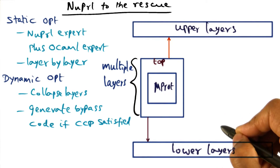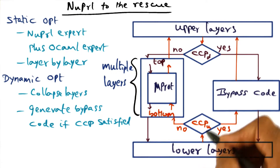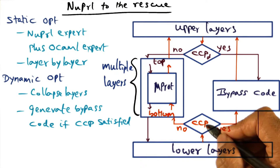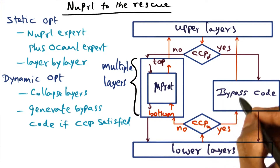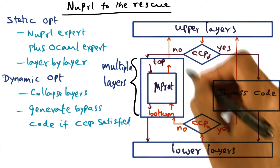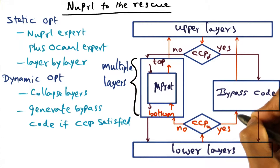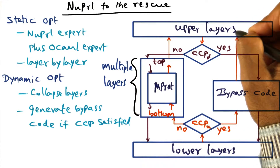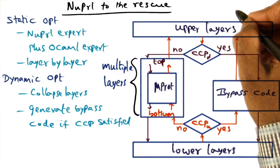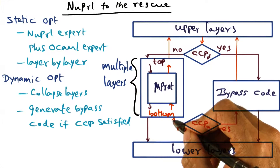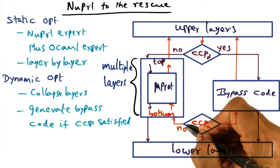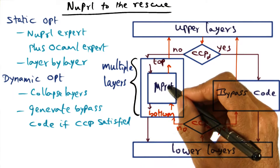So what we have is a common case predicate — for instance, it asks: is the sequence number in the packet what I'm expecting it to be? If that is the sequence number I'm looking for, then I can execute this bypass code and completely eliminate all these multiple layers of protocol and go directly to the upper layer, perhaps all the way up to the application. On the other hand, if the common case predicate is not satisfied, then you have to do the normal processing of giving the packet to the micro protocol, and it does its own thing.